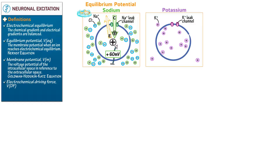Again, balance those charges with chloride ions. Show that when a potassium channel opens, there's an efflux of ions out of the neuron, which creates a negative charge within the cell.